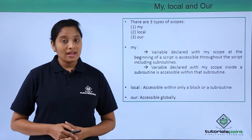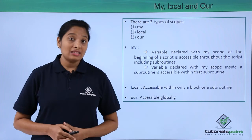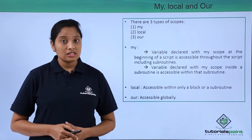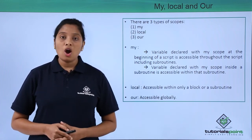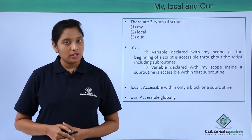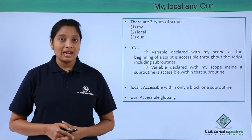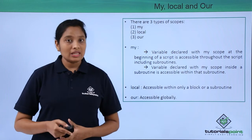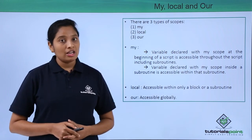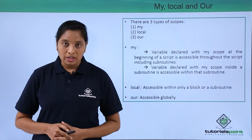When a variable is declared with my scope at the beginning of the script, that variable is accessible throughout the script and also within the subroutines. If a variable is declared with my scope within the subroutine, then that variable will be local only to that subroutine.